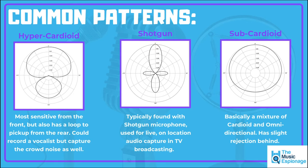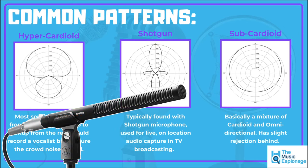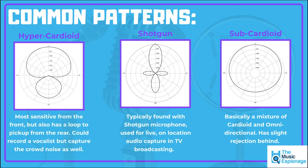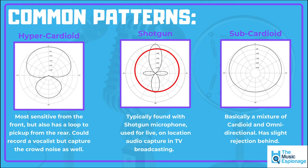The shotgun polar pattern comes from the shotgun microphone and is a really tailored pattern, often used for on-location audio capture in TV and film broadcasting. It has a heightened, exaggerated lobe at the front so that whatever you point it at is picked up with super clarity. You also get some smaller lobes from the left and right that capture some ambience beyond the main sound source at zero degrees.